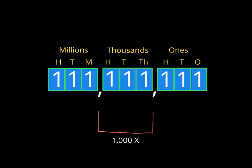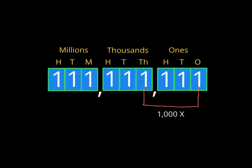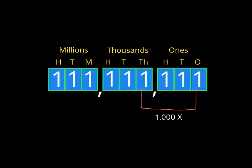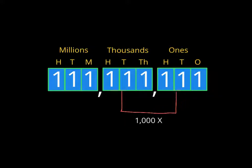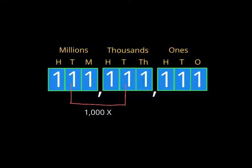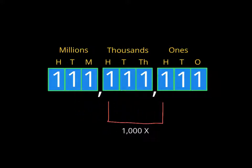And if we do digits that are 3 places away, that would be 10 times 10 times 10, or 1,000. So the 1 in the 1000s column is 1,000 times bigger than the 1 in the 1s column, as is the 1 in the 10,000s compared to the 10s, and the 1 in the 100,000s compared to the 100s. If they're 3 away, they're 1,000 times bigger. 4 away would be 10,000. 5 away would be 100,000. It multiplies by 10 every single time.